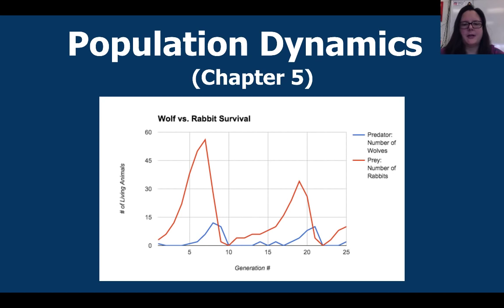If you look at this picture it should look very familiar. This is a graph of the activity that you did in the predator-prey simulation with wolves and rabbits. Pay close attention to what happens when each population rises and when they fall. What might be causing that drop in population size?